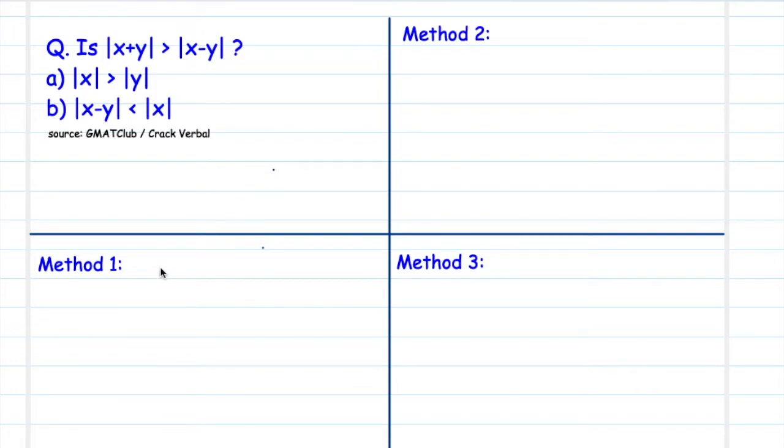We will start by solving this problem with algebra. We'll move on to take some values and solve this question. This method is also very important because in GMAT sometimes that's all you get the time to do is take on values and solve questions. The third we will use a number line method and we'll also talk about where this method is more applicable. So let's get started.